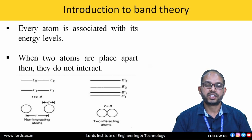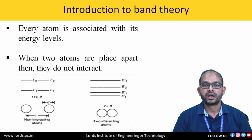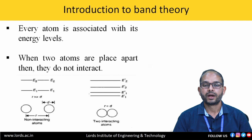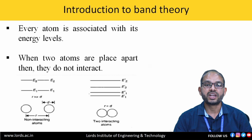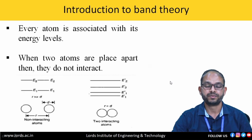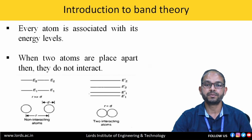Band theory is very important before we step into formation of a PN junction. Every atom consists of a nucleus around which electrons revolve in their own energy levels, and they have different energy levels. For an isolated atom, the energy levels are isolated. For a group of atoms, the energy levels are grouped. When we talk about solids, we have n number of atoms close to each other; hence, the energy levels become a group of energy levels and we get energy bands.